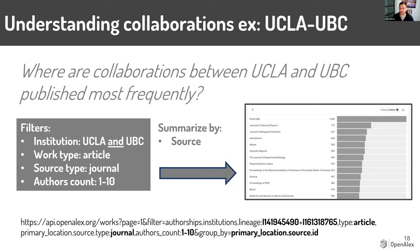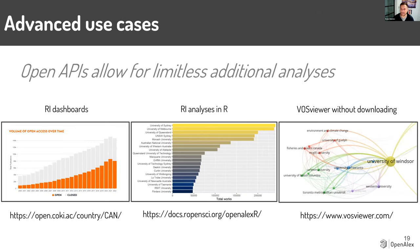That's the basics of how to start using the UI for research intelligence at the institutional level. The UI is meant to be a starting point — all of the data is open through APIs and by downloading the whole dataset, so much more is possible. Sometimes the user interface will be a stepping stone to building an internal dashboard. The example on the left is a research intelligence dashboard showing the volume of open access over time in Canada, developed by Koki — you can integrate the APIs with your internal and external dashboards to do things like this. Once you've come up with an analysis you like in the user interface, you can copy that API and work with someone who can code to develop something similar.